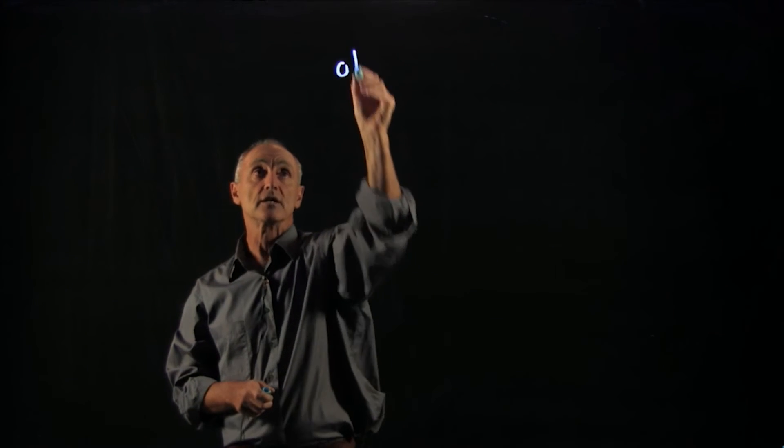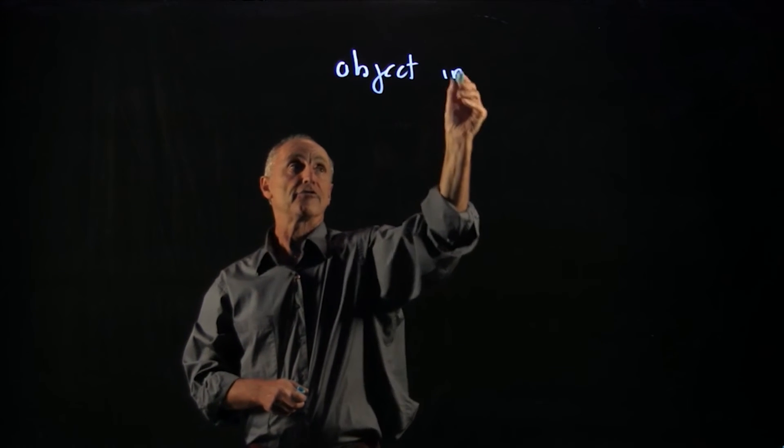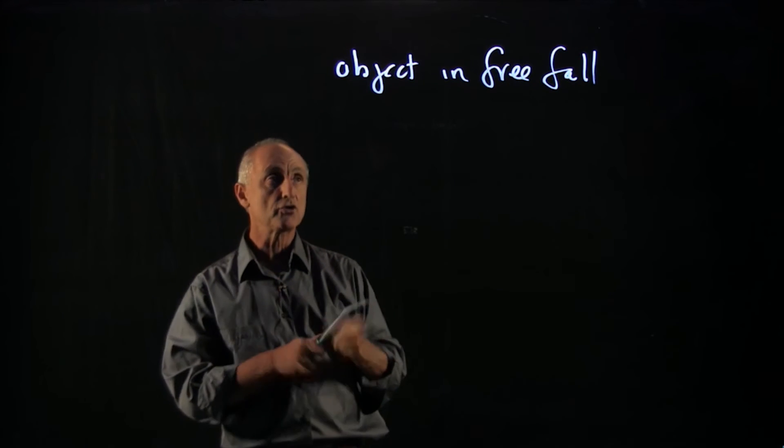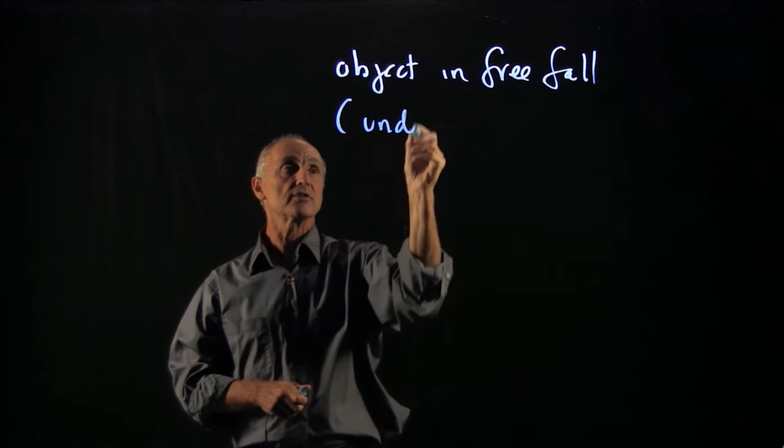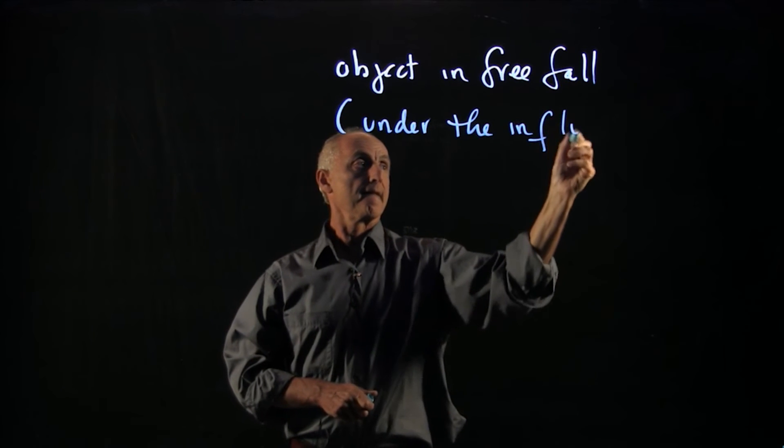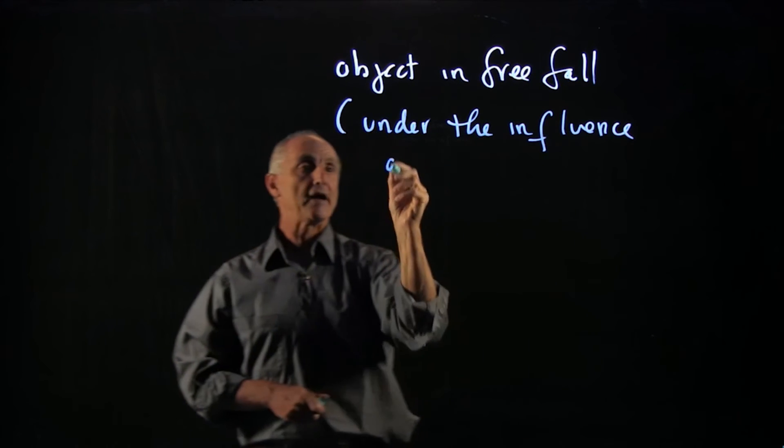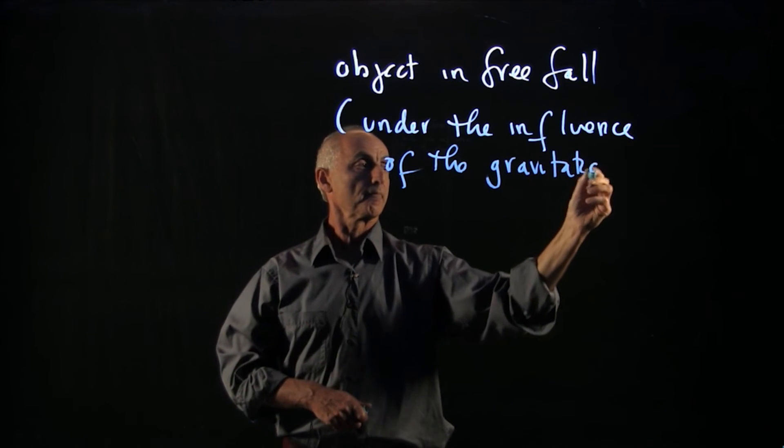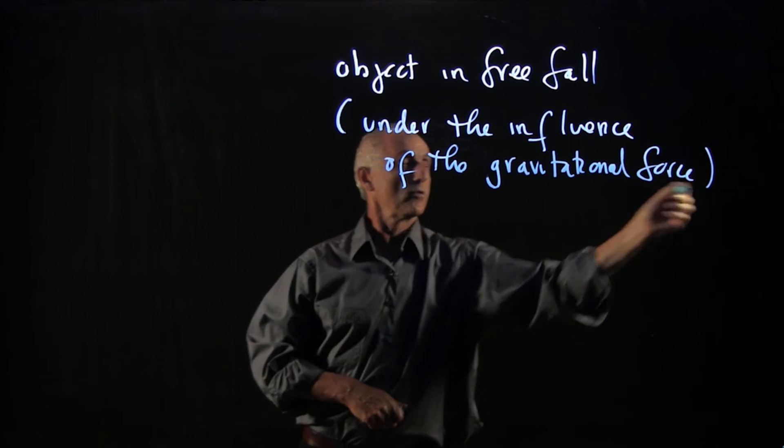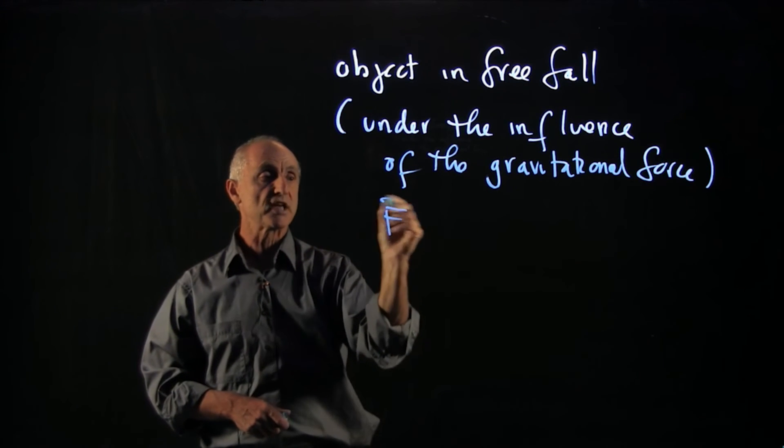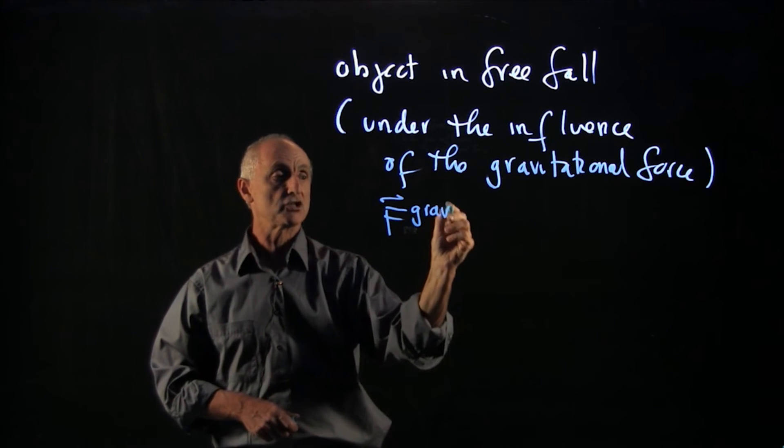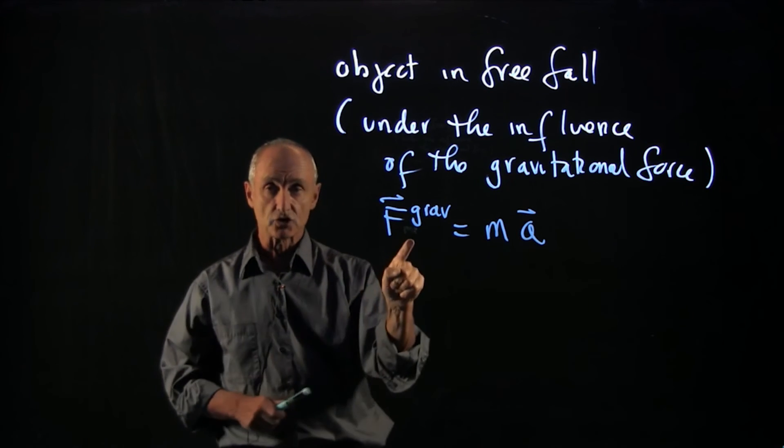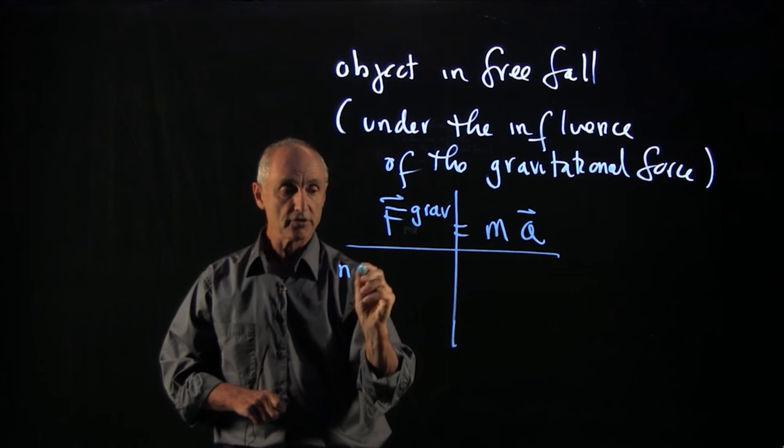And so for an object in freefall, which means under the influence of the gravitational force, we can conclude from Newton's second law that the gravitational force equals ma, so this gravitational force is non-zero, and so therefore the acceleration is also non-zero.